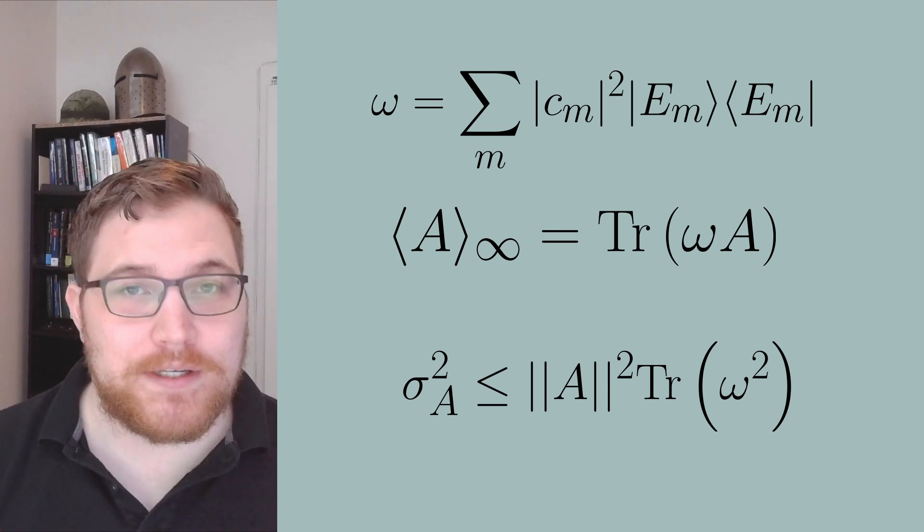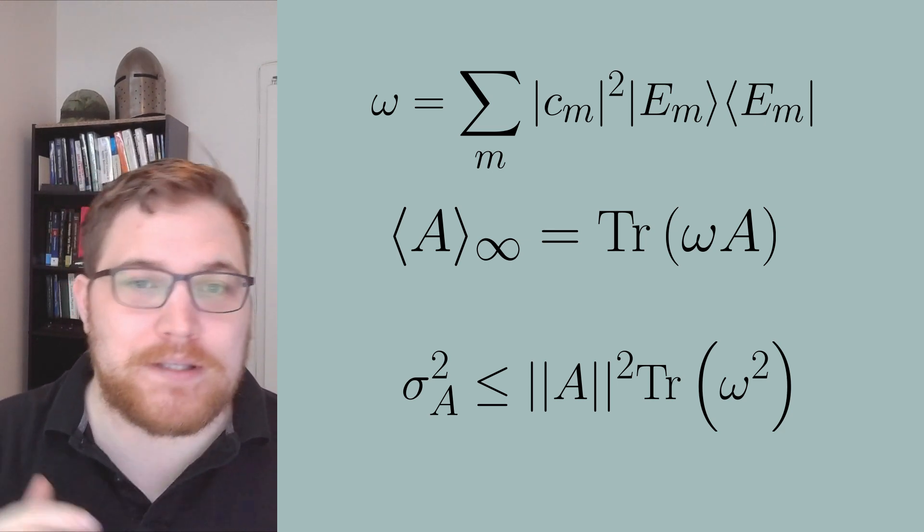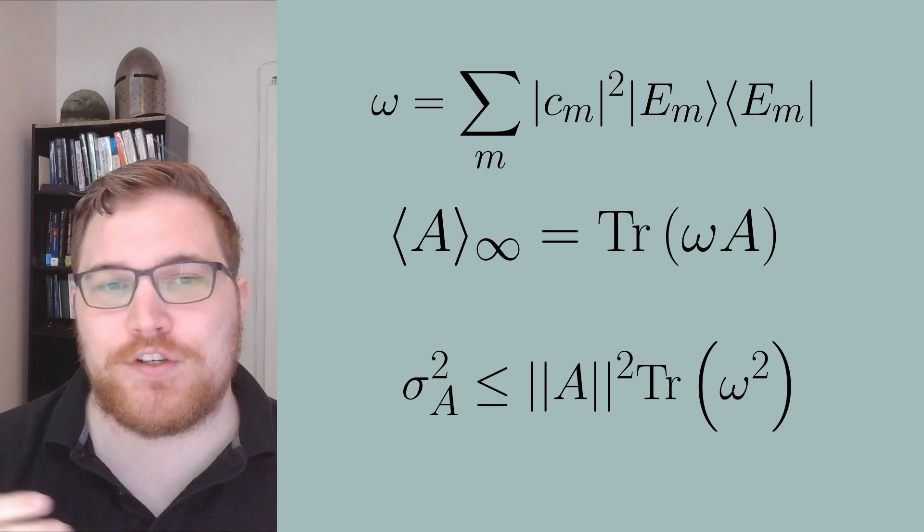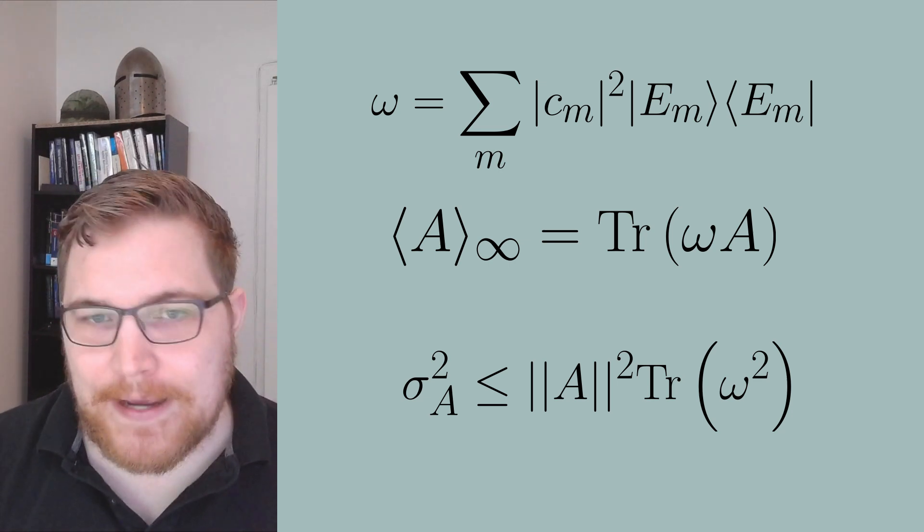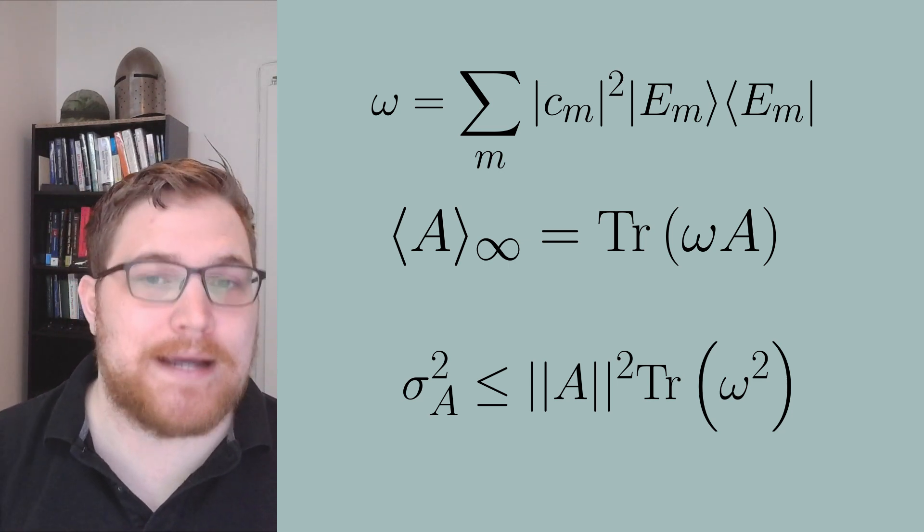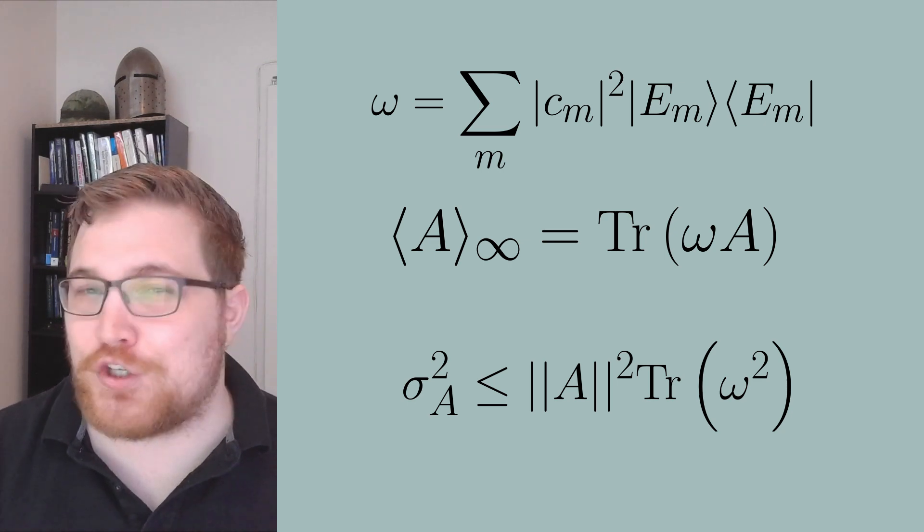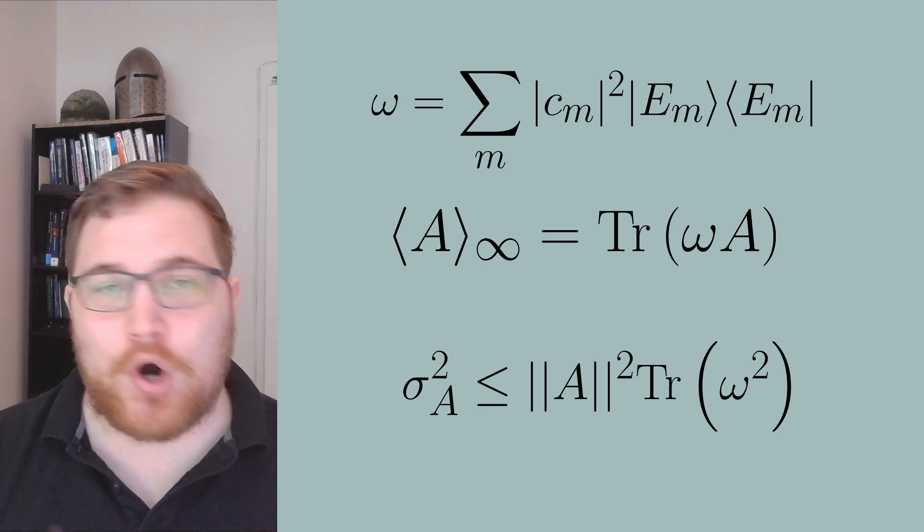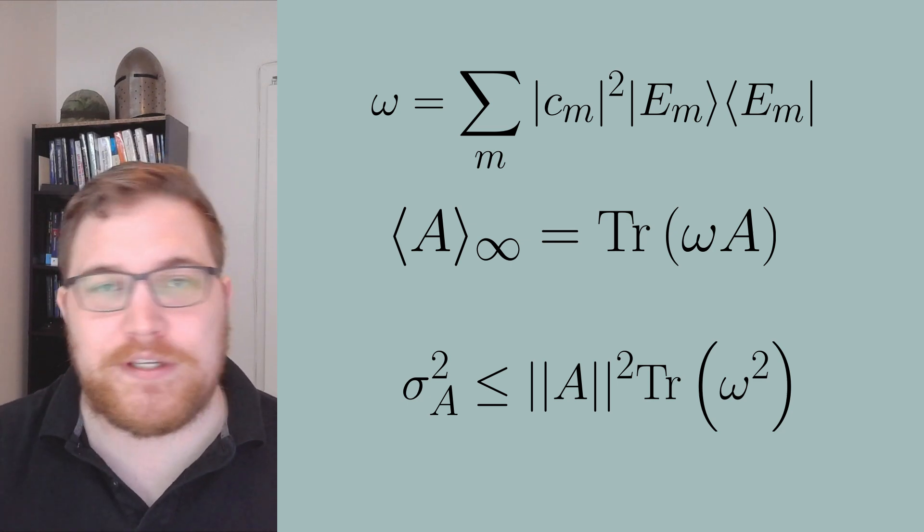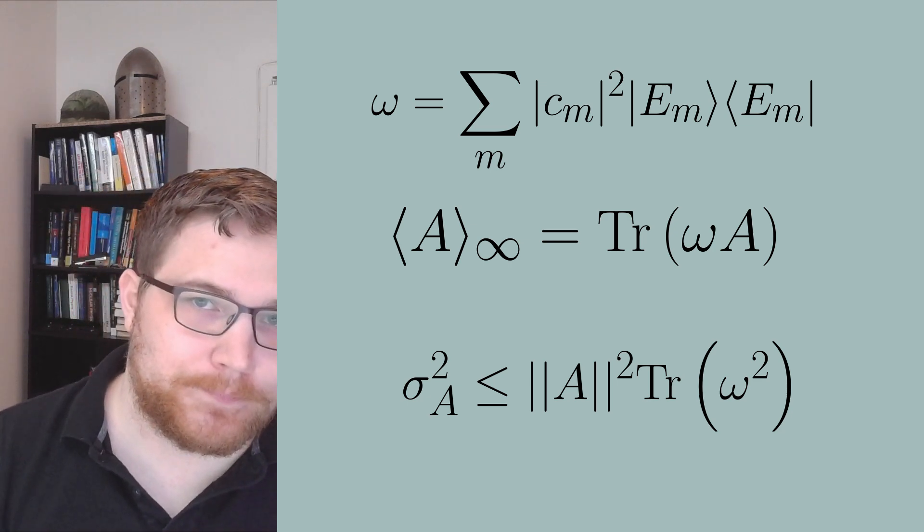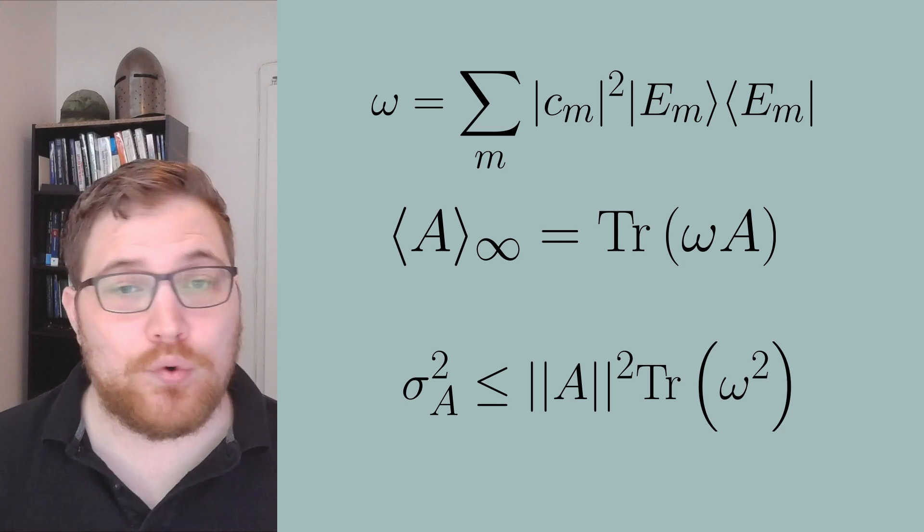So that was definitely a long-winded explanation, but the moral of the story is as long as we have a lot of energy eigenstates participating in the dynamics and there aren't a few energy eigenstates with extremely large weight all on their own, we should eventually see static equilibrium.